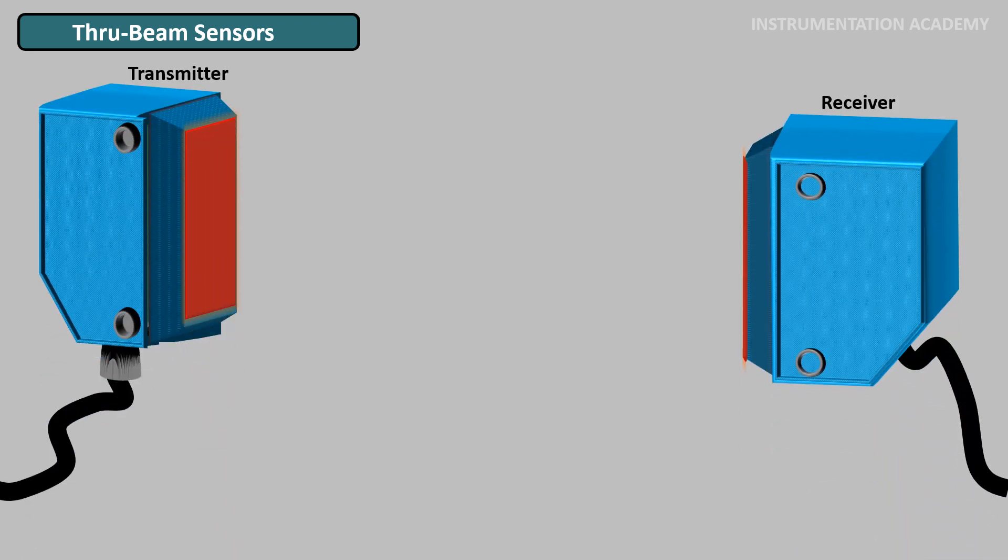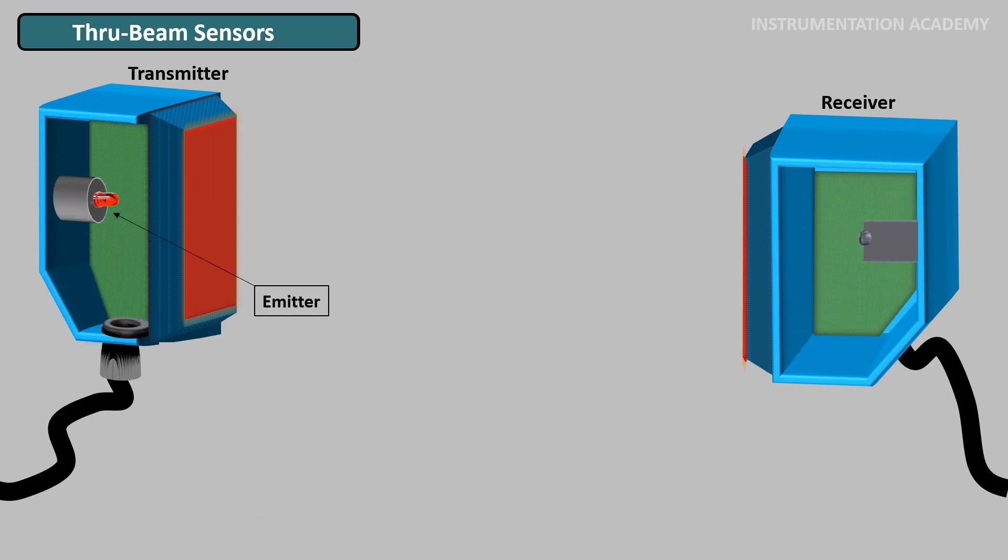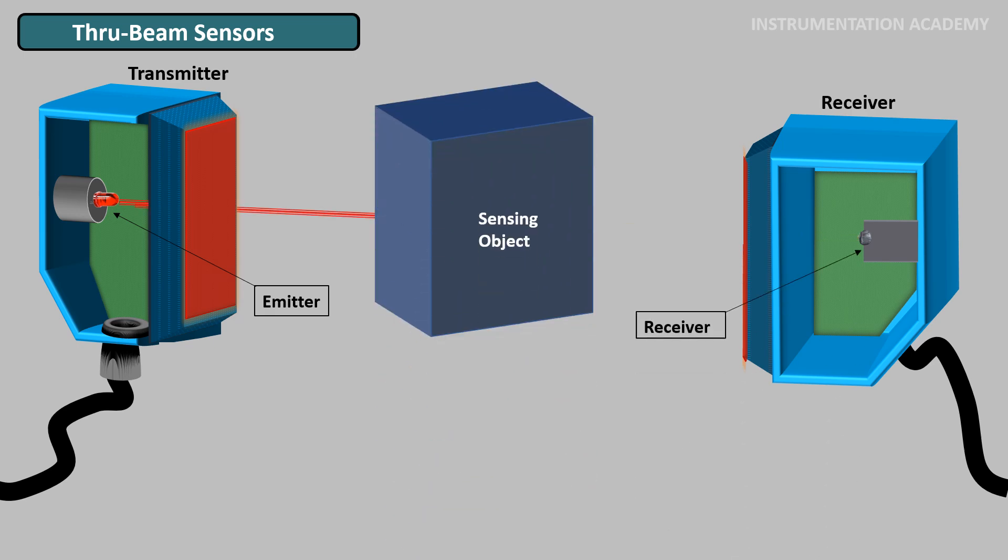Through beam sensors are photoelectric sensors with a separate transmitter and receiver which are placed facing each other. This is also called a through beam configuration. In this type, an emitter sends out a beam of light directly in the line of sight of the emitter to a receiver. When an object breaks this beam of light, it reduces the amount of light that enters the receiver. This reduction in light intensity is used to detect an object.